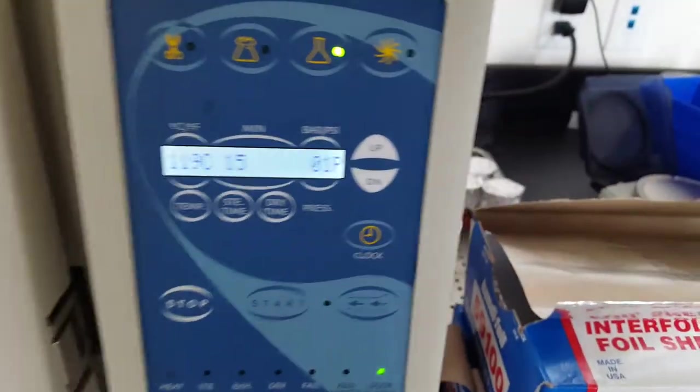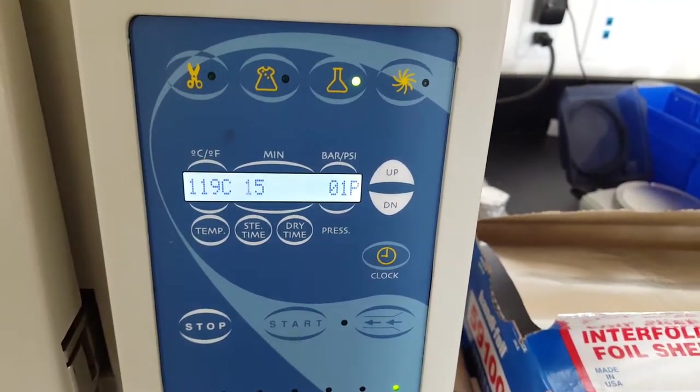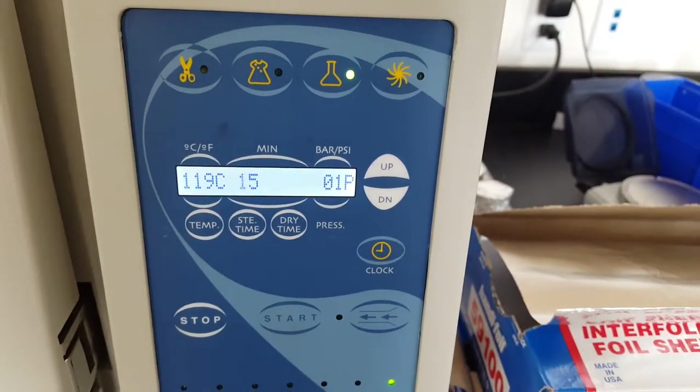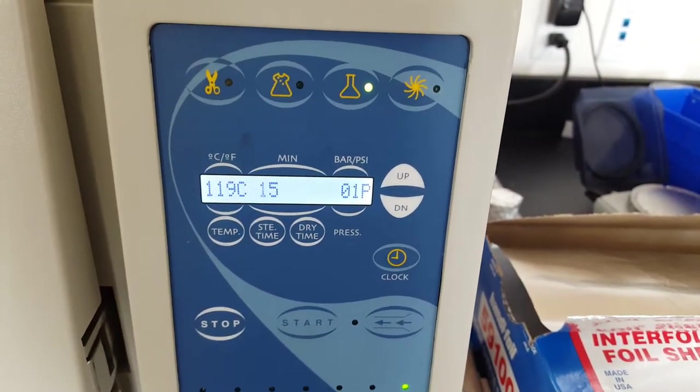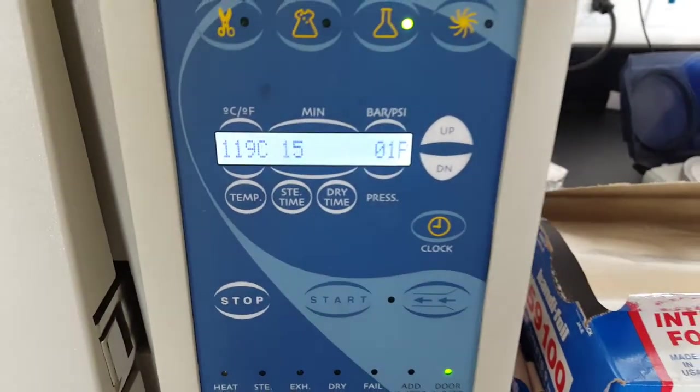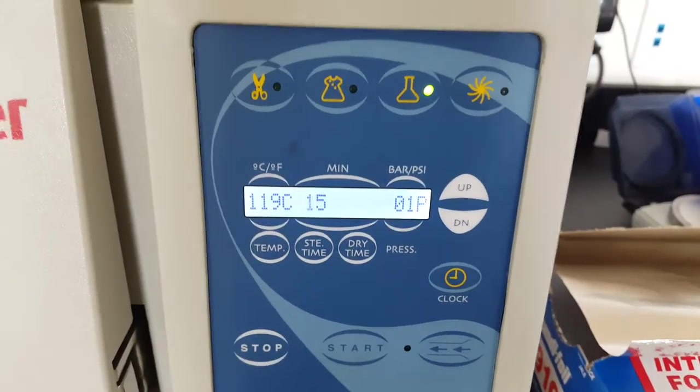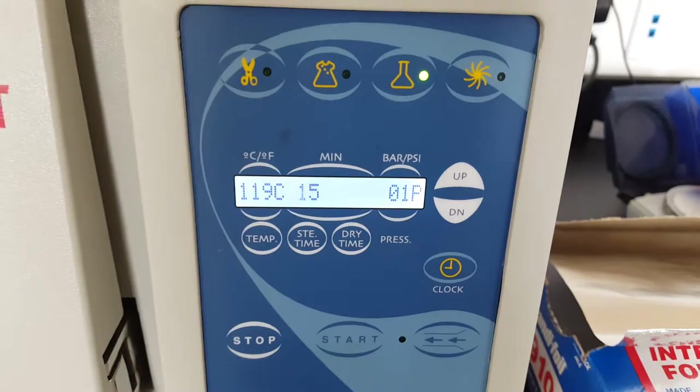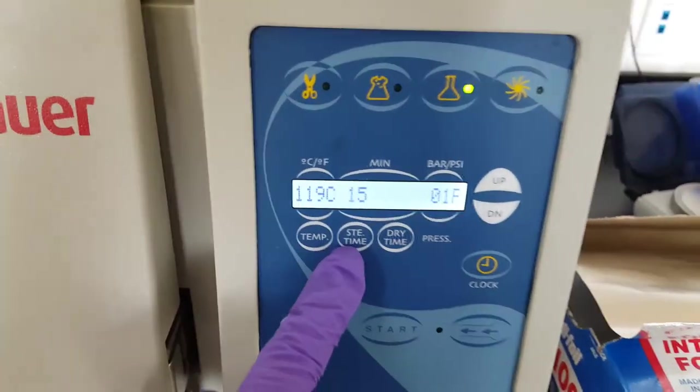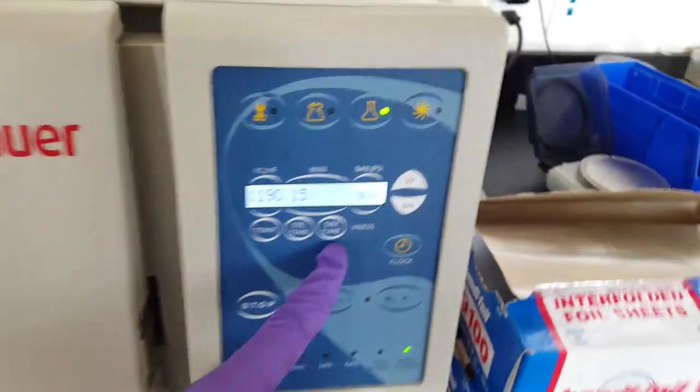Something that I didn't mention is that you never want to open the autoclave while it's running. The way that you can tell is if the PSI, if that pressure section is greater than one, definitely don't open the autoclave. Essentially that section tells you the temperature on the left, and you can set the temperature with this button. And then this is the sterilization time, which you can also set. And then this is the time to dry it, which you can also set.